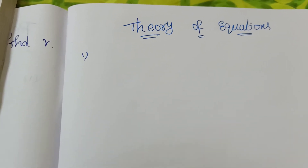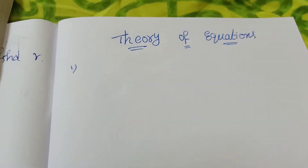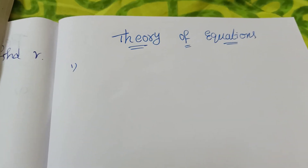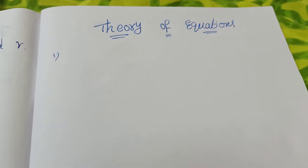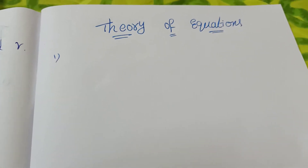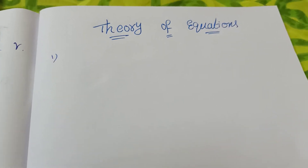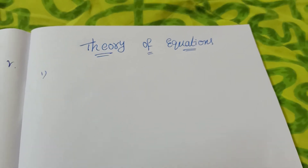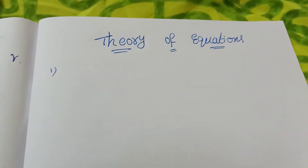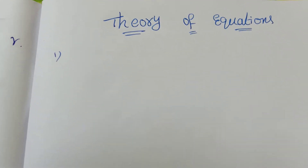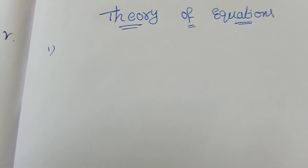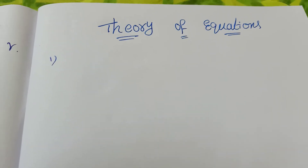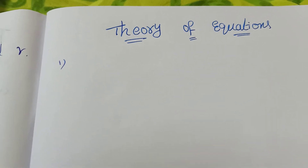Hi students, today we are discussing theorem equations. This is a secondary topic — senior intermediate 2A. Here we are explaining the first formula: polynomial. What is the difference between polynomial and equation? First discussing that. If you find this useful, please subscribe to my channel, share, and give a like.